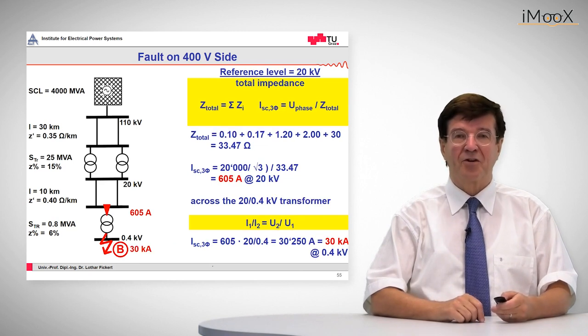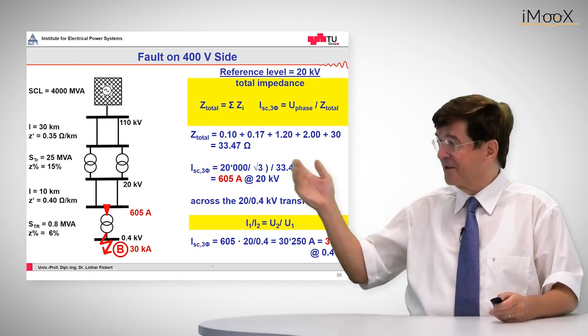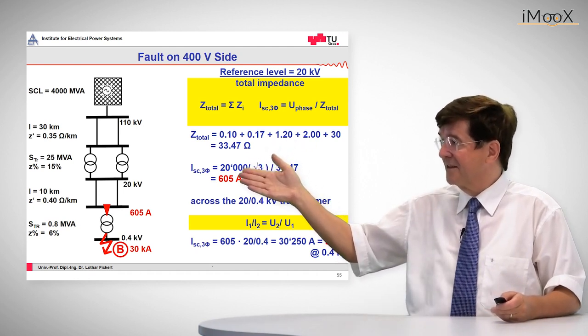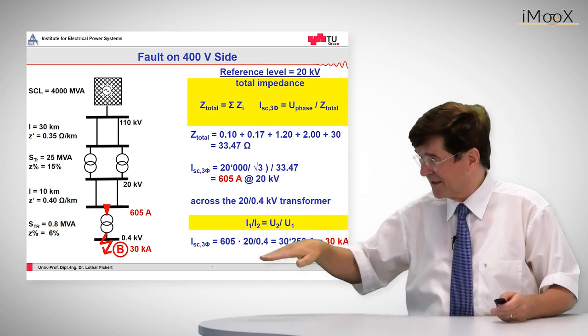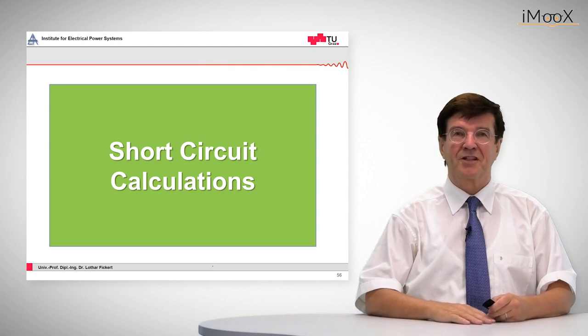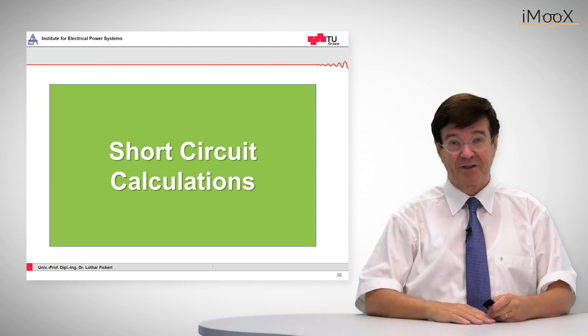So the total result is given in this picture: 605 amps on the high voltage side of this ring main unit transformer, 30 kA at the low voltage side, and that was the chapter about short circuit calculations. Thank you very much.